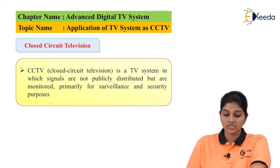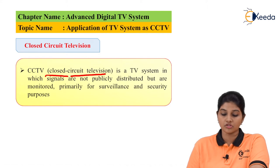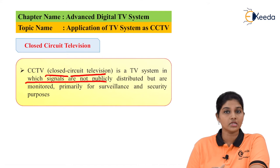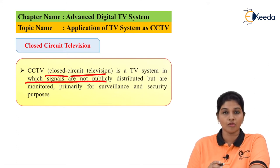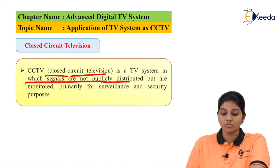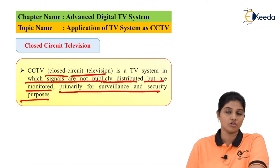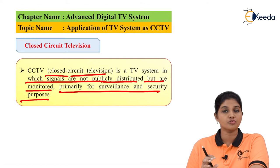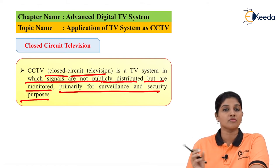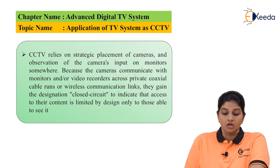CCTV stands for Closed Circuit Television. It is a television system in which the signals are not publicly distributed — that means the signals are not available to the public, but are used for monitoring. It is basically used for the purpose of security, monitored primarily for surveillance and security. The basic function of CCTV is to provide information regarding security or surveillance of the system.